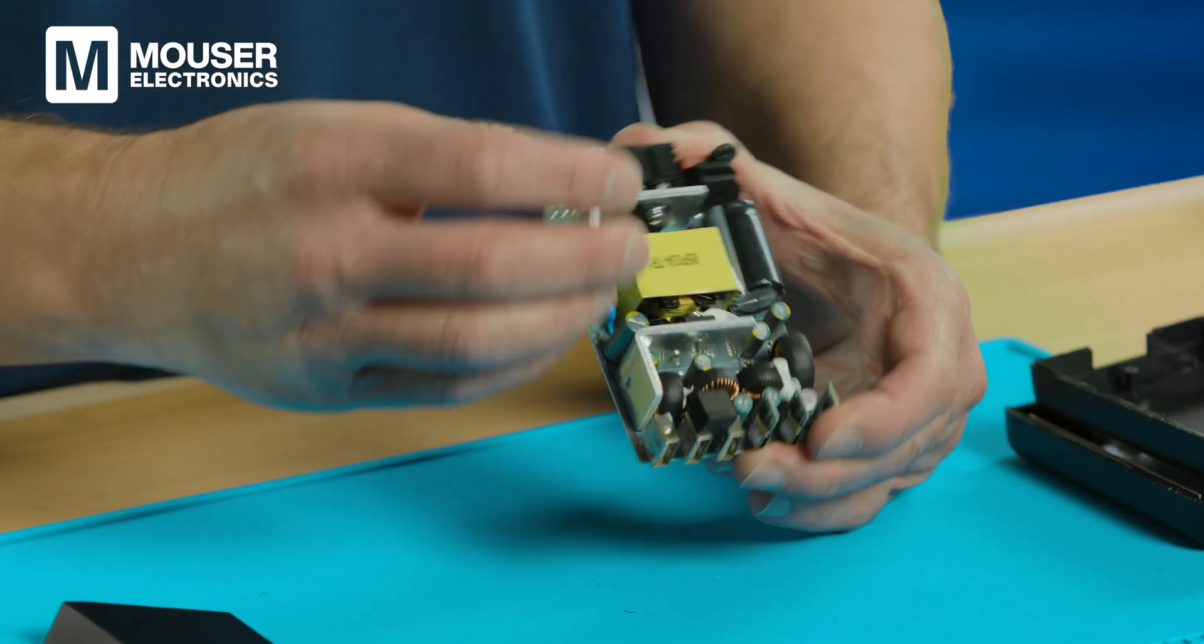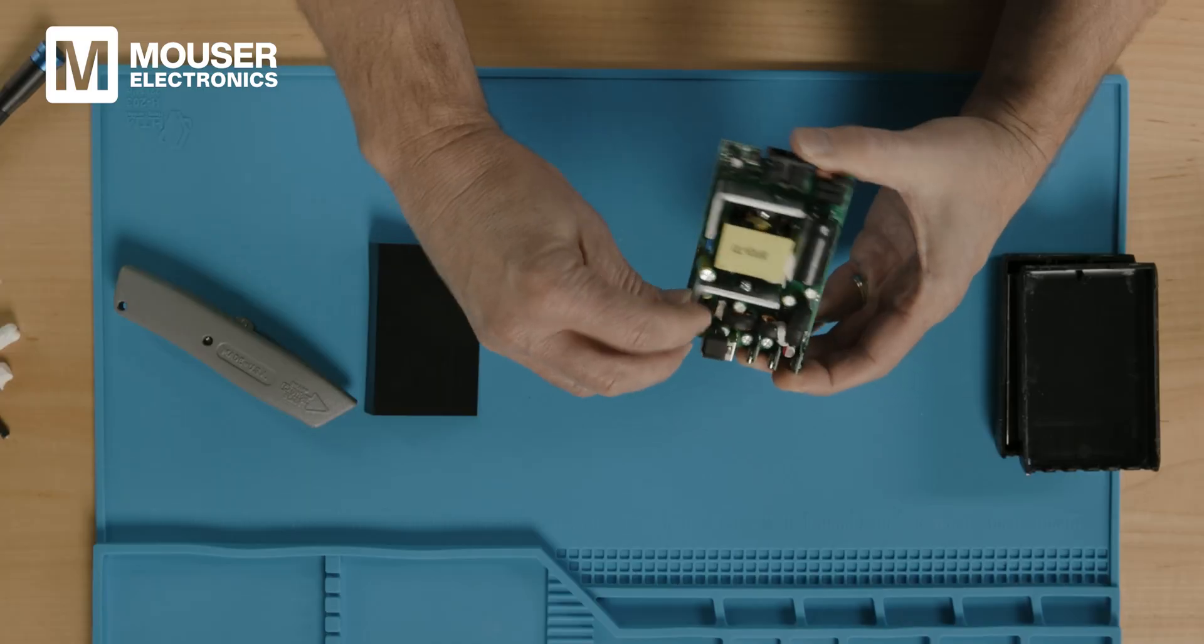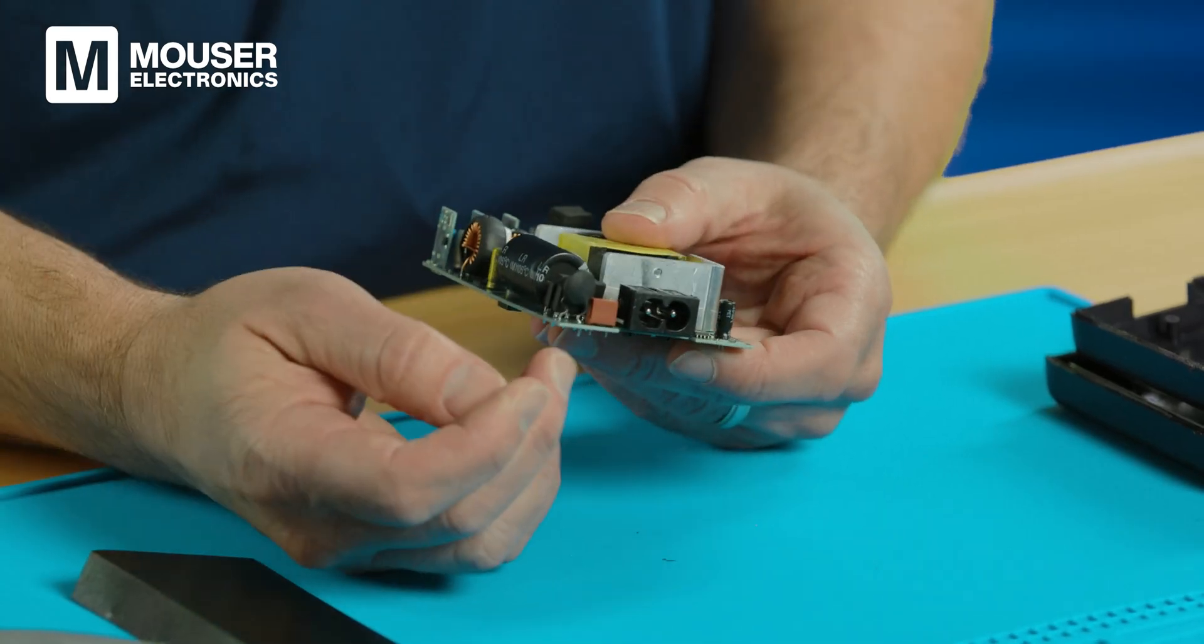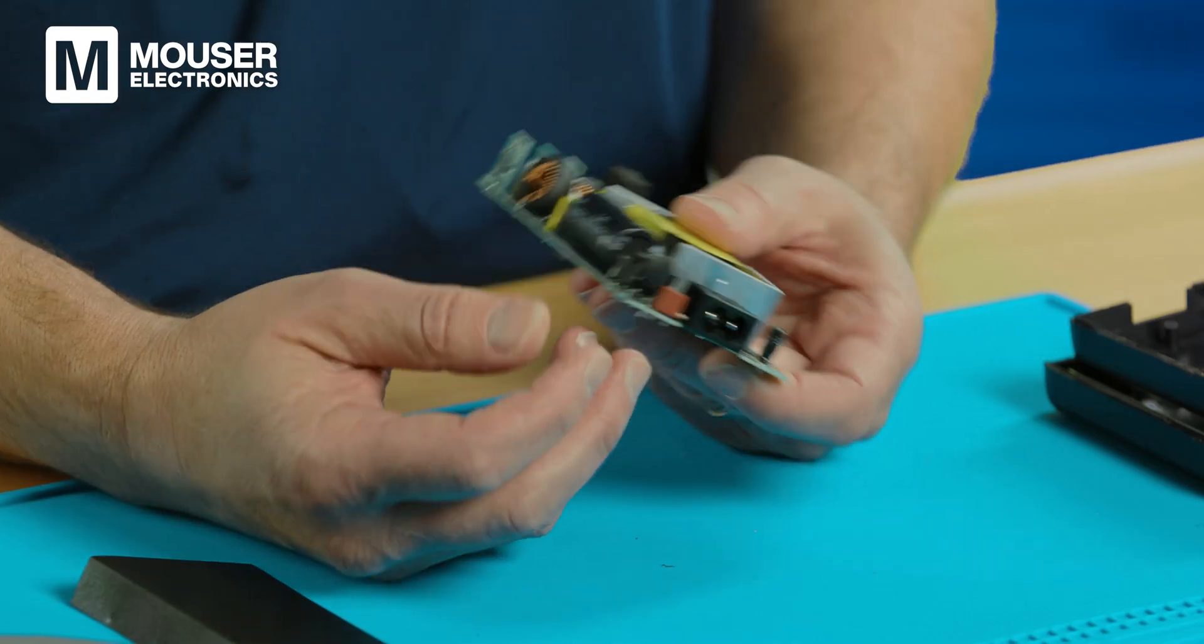two power FETs. We'll look at these in a little more detail in a second, mounted to these giant thermal plates for heat transfer. Turning this around, we've got the power plug here near it.